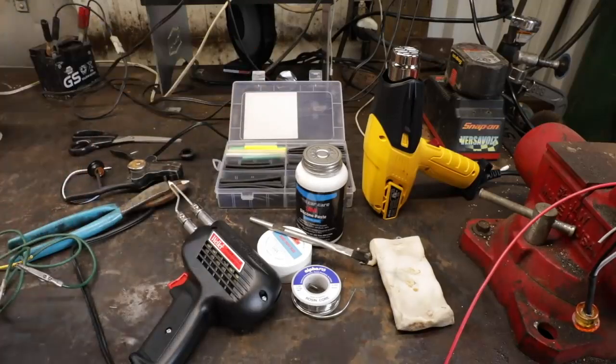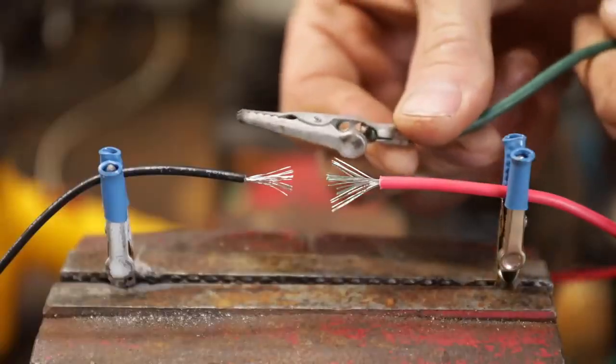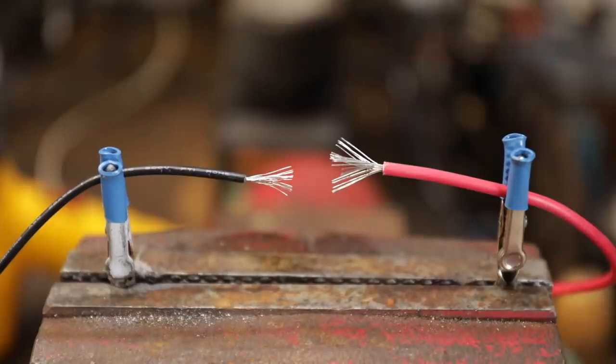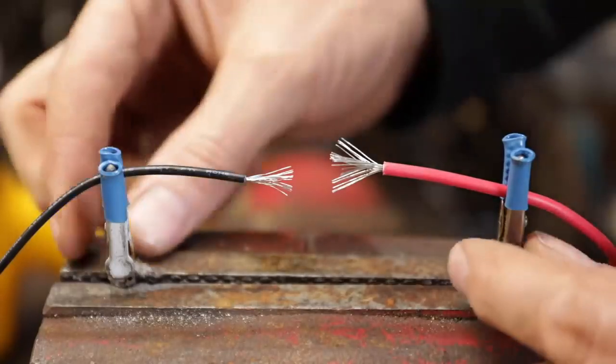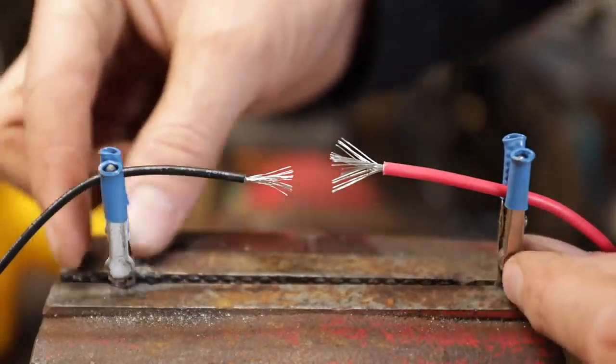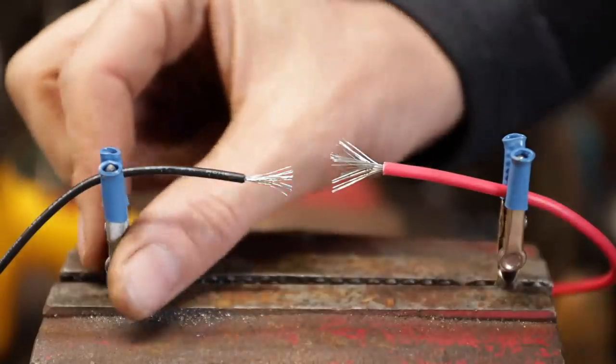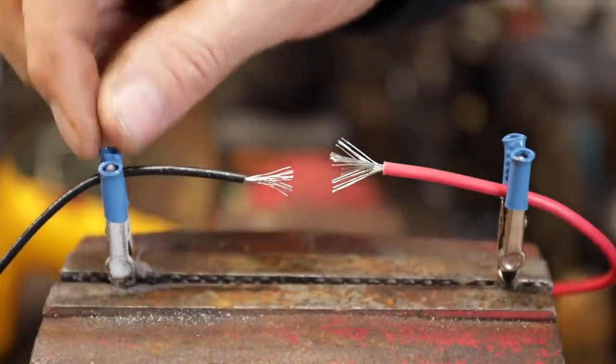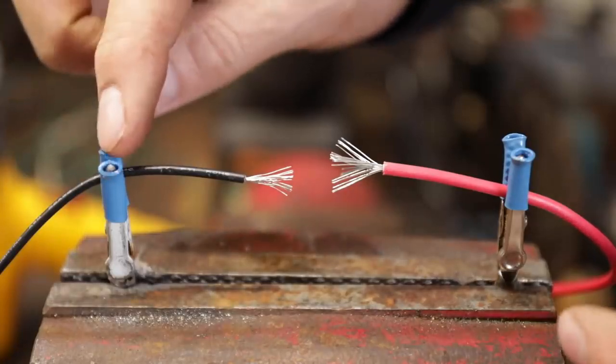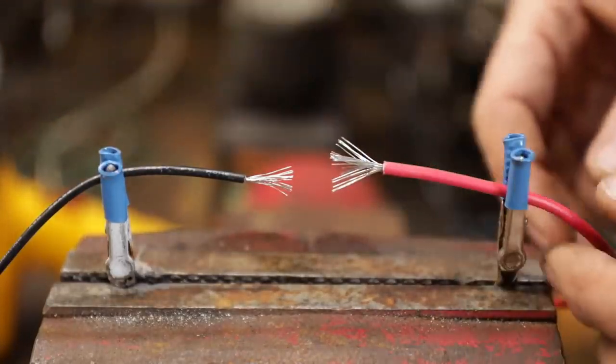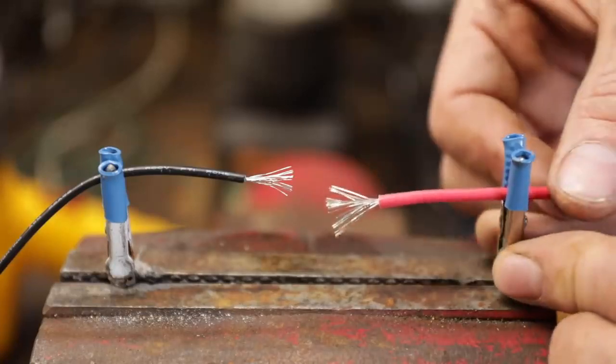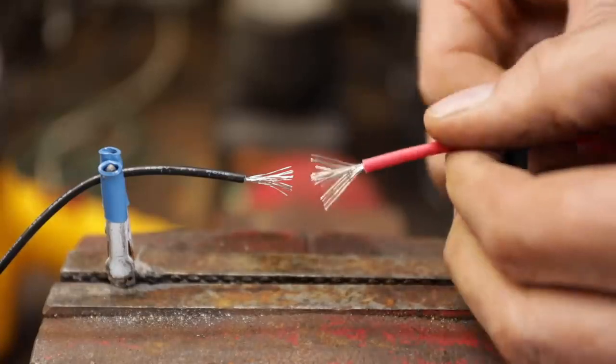Do yourself a favor and get a couple of these alligator clips. You don't have to have those fancy stands if you're just doing this once in a while. Take two alligator clips and clamp them in your vice like this. Some of these alligator clips have a pretty tight spring on them, so take some shrink tubing and melt it on there so they won't mess up your wire. This is going to hold things securely and you're going to get a much better job.